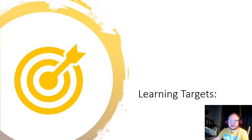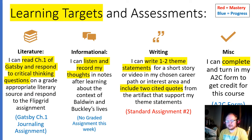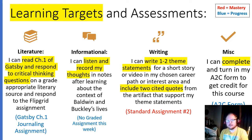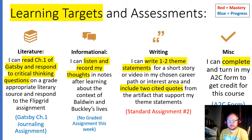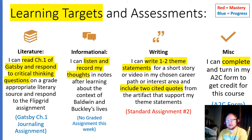Let's take a look at our learning targets for this week. Our first target for literature is reading chapter one of Gatsby and responding to some critical thinking questions using a Flipgrid assignment, which is posted in Google Classroom — a graded assignment this week under the Small Assignments Classwork space. The second learning target is for your informational lessons — there is no graded assignment for those informational texts this week, but your goal is to listen or record your thoughts and notes after learning about the context of Baldwin and Buckley's lives. You should be taking notes; you'll be able to use those notes later when we're working on our research papers.